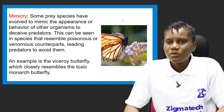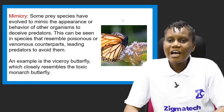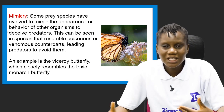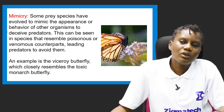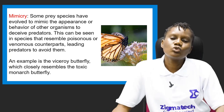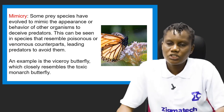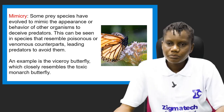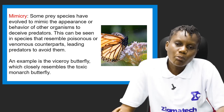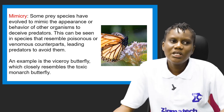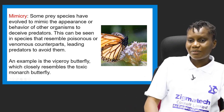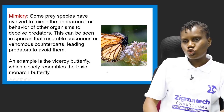The fourth prey adaptation is mimicry. Some prey species have evolved to mimic the appearance or behavior of a dangerous species — even though they are not dangerous or poisonous themselves. This deceives predators into avoiding them. An example is the viceroy butterfly, which closely resembles the toxic monarch butterfly but is not actually toxic. When predators see something that resembles the monarch butterfly, they avoid it entirely.